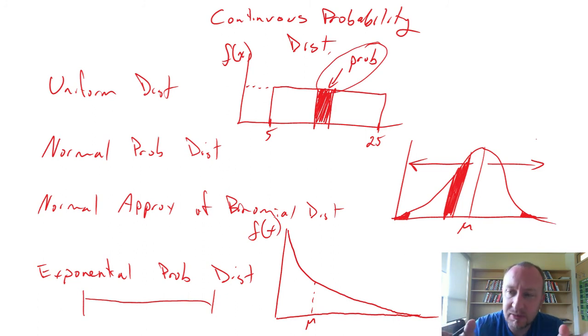the exponential probability distribution can be used to estimate the amount of time between customers arriving at the till. So now we're looking at the continuous variable, or the time variable, between two discrete objects, or two discrete events.